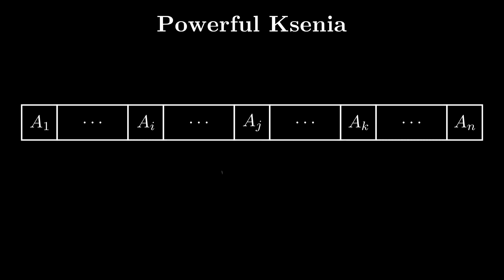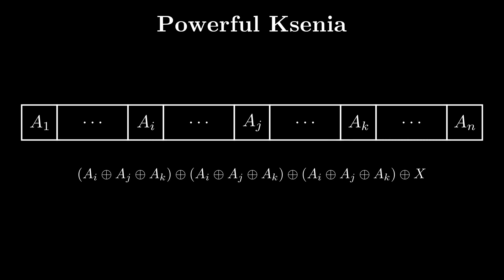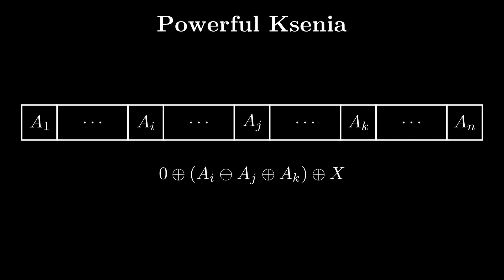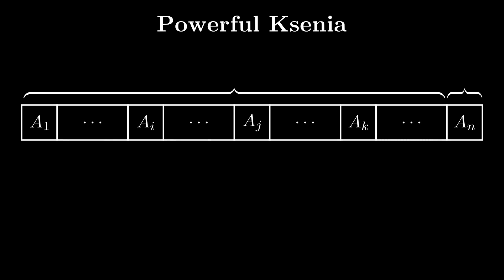Let i, j, and k denote the positions we perform the operation on, and let x be the XOR of all the other elements. Before the operation, the XOR of all elements was a[i] XOR a[j] XOR a[k] XOR x. After the operation, the XOR of all elements remains the same, since the three replaced values are the XOR of the original three. Note that the XOR of the array is essentially the XOR of a single element XOR the rest of the array.